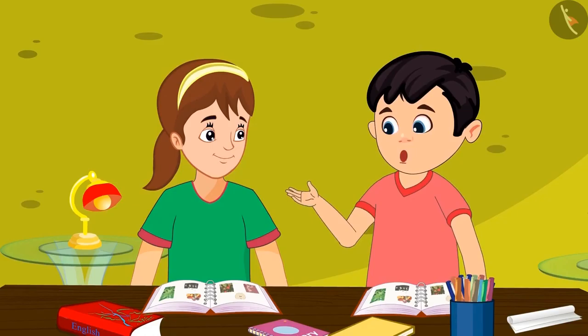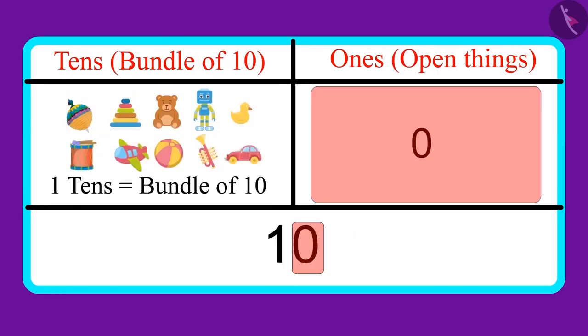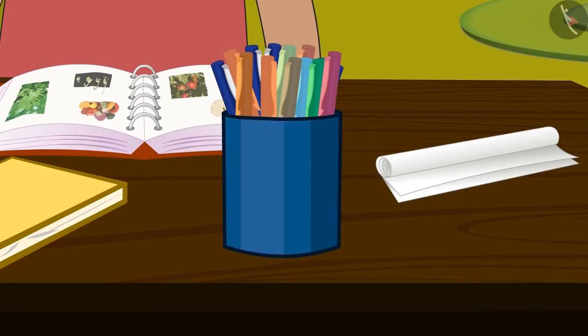No Auntie, it doesn't mean one. One tens means a bundle of ten. That means I have ten toys. Did you understand? Oh yes! So children, that means one ten and zero ones make ten.